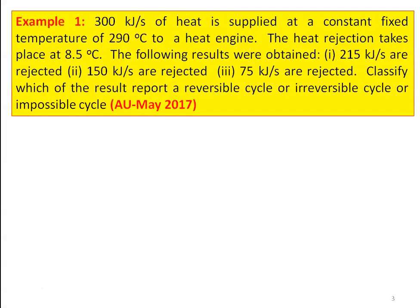We take the first example from the Anna University question paper, May 2017. 300 kJ per second of heat is supplied at a constant temperature of 290 degree Celsius to a heat engine. The heat rejection takes place at 8.5 degree Celsius. The following results were obtained: (1) 215 kJ/s are rejected, (2) 150 kJ/s are rejected, (3) 75 kJ/s are rejected.